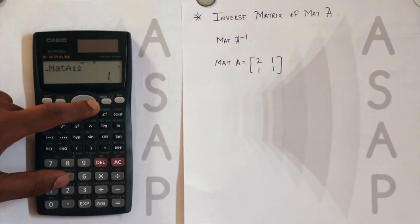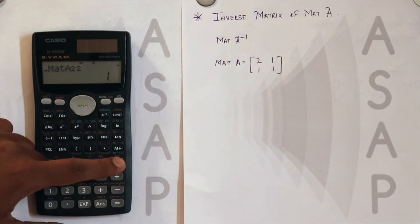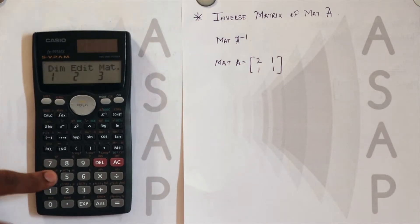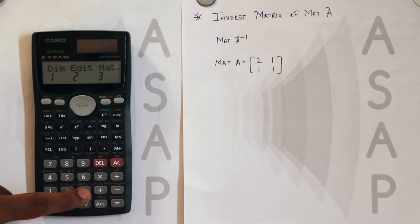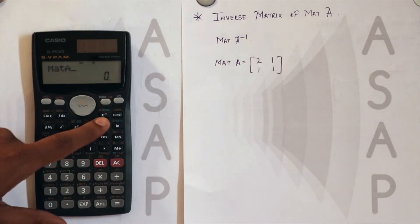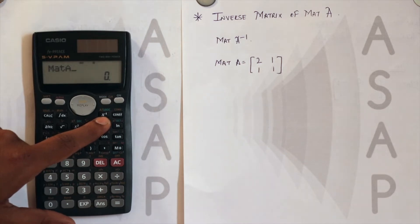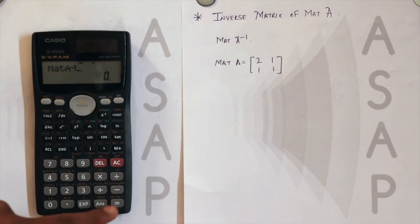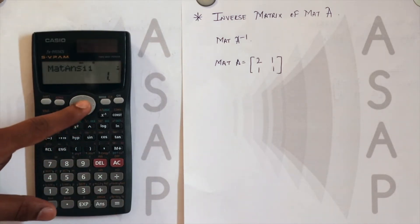Matrix A has A(1,1) = 2, A(1,2) = 1, A(2,1) = 1, A(2,2) = 1. To find the inverse of a matrix, you need to select the matrix using shift 4, then matrix A, and press the option button where it is written x raised to minus 1. So matrix A raised to minus 1 is the inverse of matrix A. Press equal.